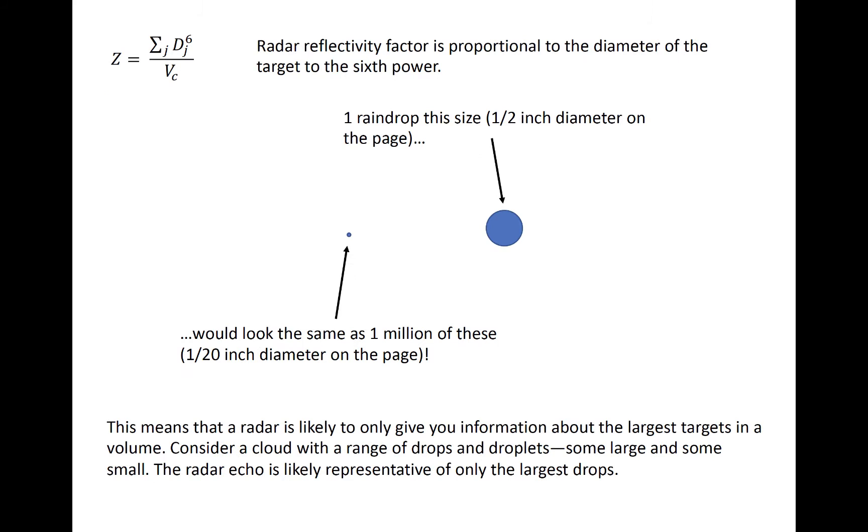As a result of the sixth power dependence of radar reflectivity factor on size, Z is highly sensitive to the size of targets. Large targets can have outsized influence on Z in a volume. Consider the examples shown here.